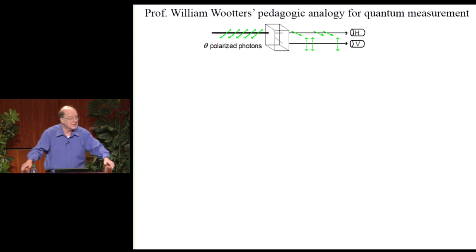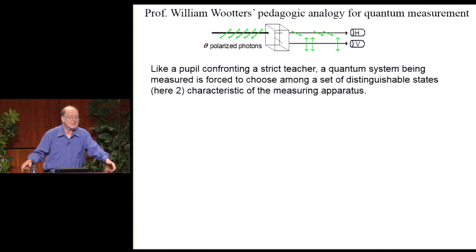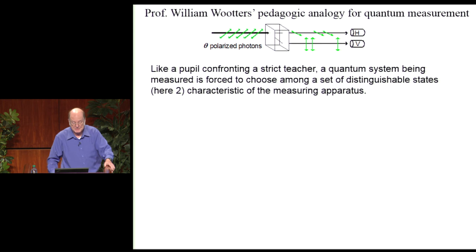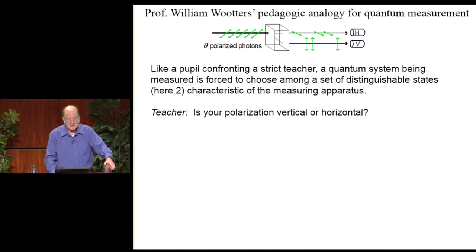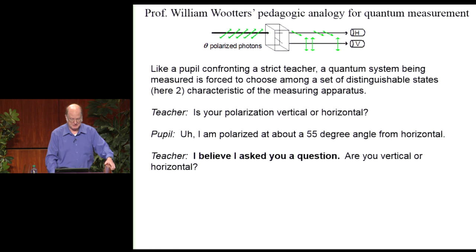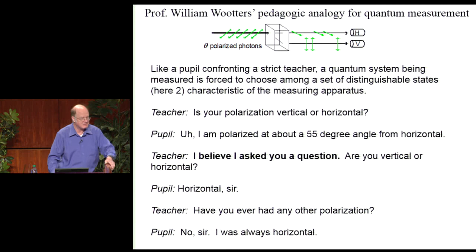My colleague William Wooters at Williams College offers this analogy: how does a quantum system behave when measured? It's like an old-fashioned school where students only answer the teacher's questions. The pupil is the quantum system; the teacher is the measuring apparatus. A photon says 'I'm polarized about 55 degrees,' but the teacher insists: 'Are you vertical or horizontal?' The pupil answers 'Horizontal, sir.' 'Have you ever had any other polarization?' 'No sir, I was always horizontal.' That's how quantum systems behave when you measure them.